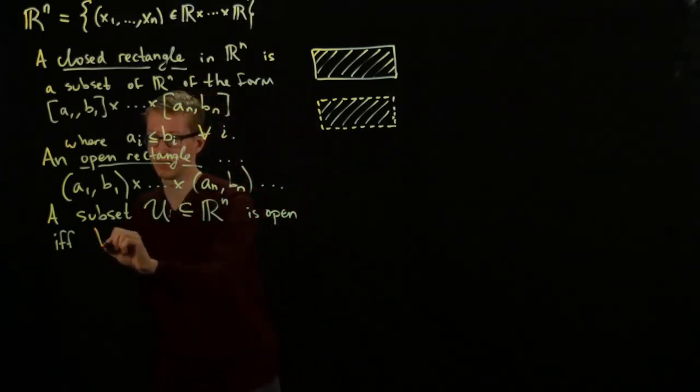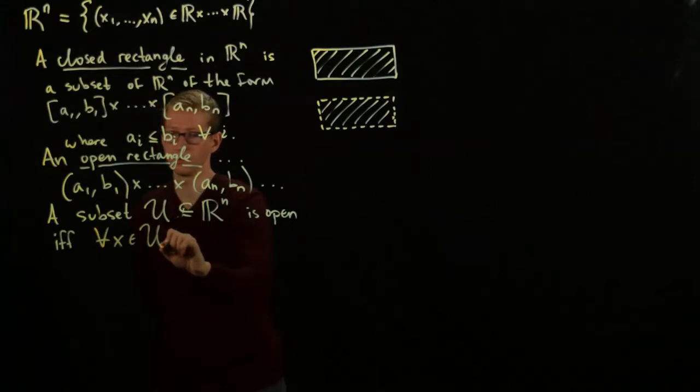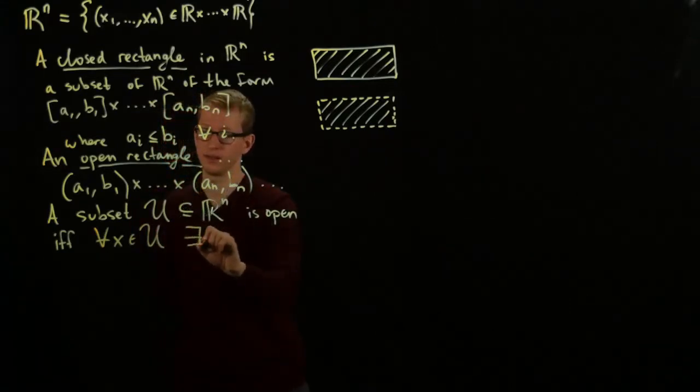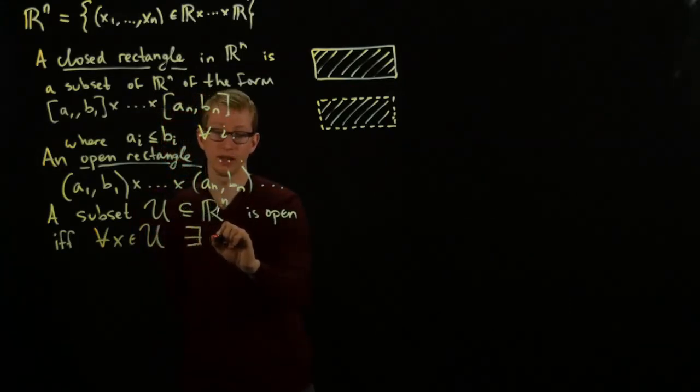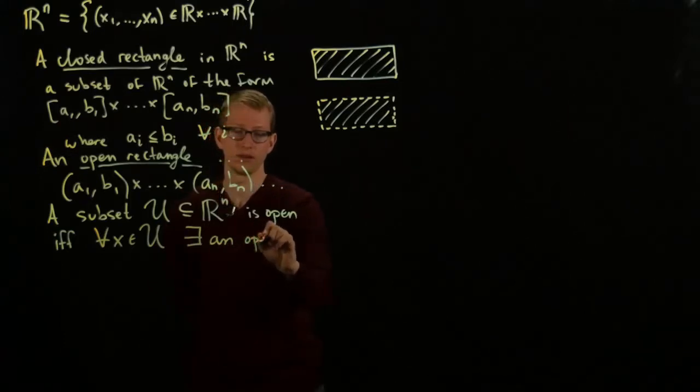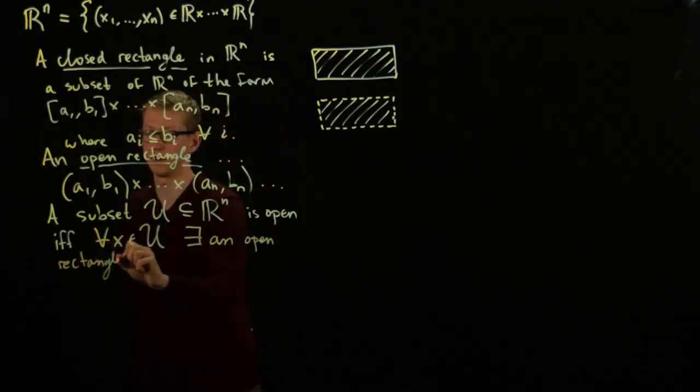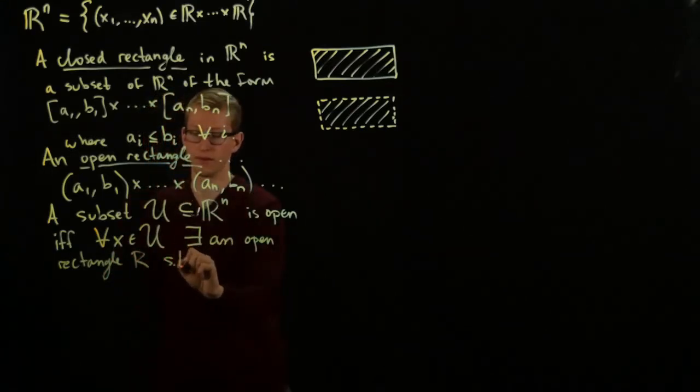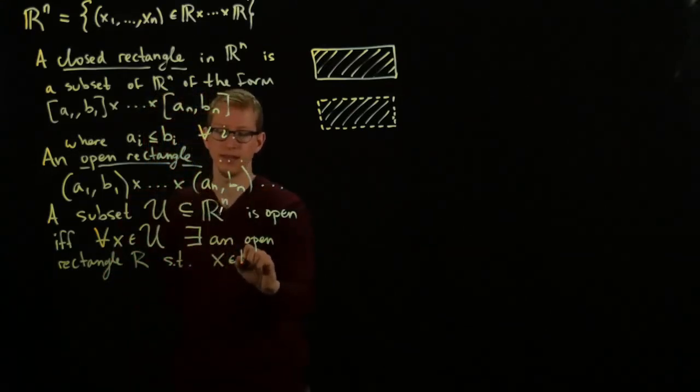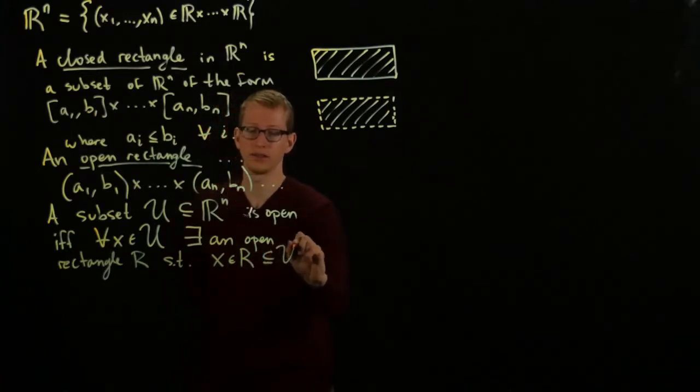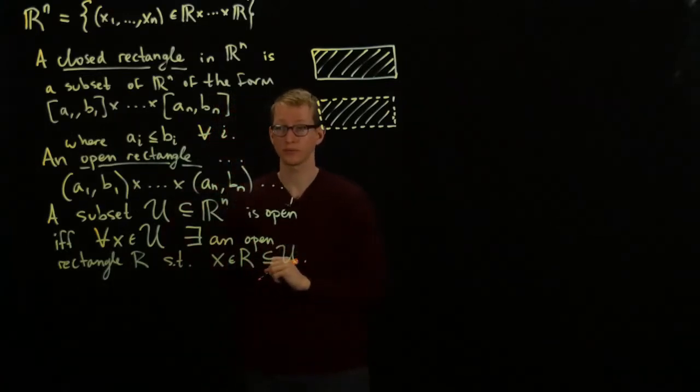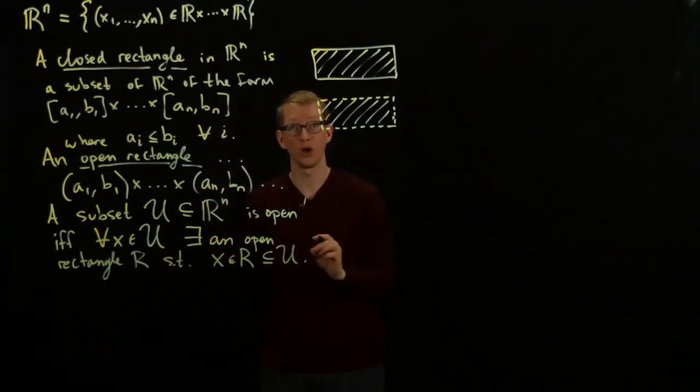If and only if, for all x in U, there exists an open rectangle R such that x is contained in R and R is contained in U. And this condition has to be satisfied for all points.